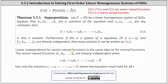Linear independence for vector-valued functions is the same idea as for normal functions. The vector-valued functions x1 through xn are linearly independent when c1 times x1 plus c2 times x2 plus all the way through cn times xn equals a zero vector has only the solution c1 through cn equals zero, where the equation must hold for all t.